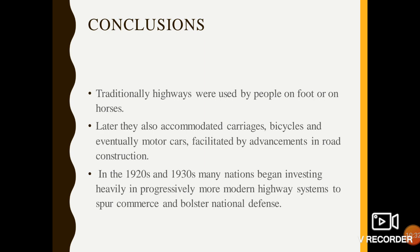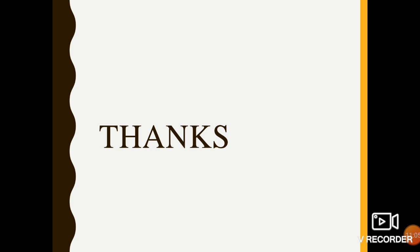In conclusion, traditionally highways were used by people on foot or on horses. Later they also accommodated carriages, bicycles and eventually motor cars, facilitated by advancements in road construction. In the 1920s and 1930s, many nations began investing heavily in progressively more modern highway networking systems to spur commerce and bolster national defense. Thank you.